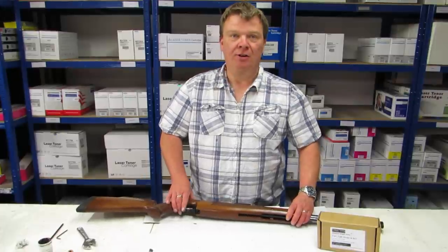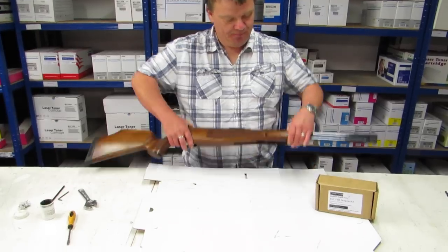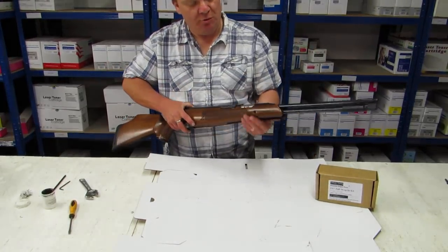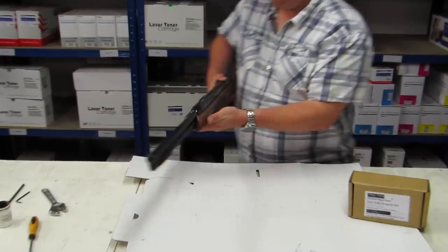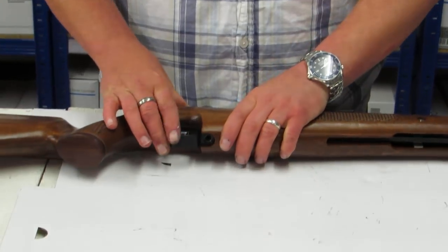This is probably the easiest air rifle in the world to strip down. The first thing we need to do is to remove the stock. There are four screws holding it together, two at the front, either side there, and two on the trigger guard.